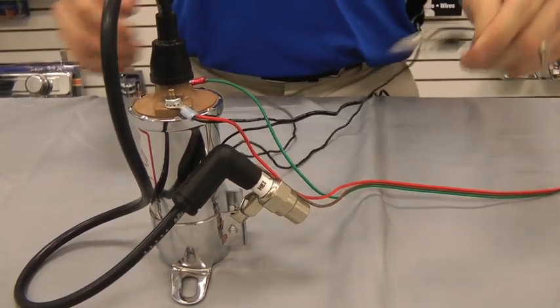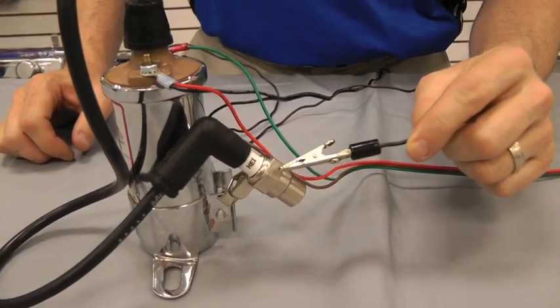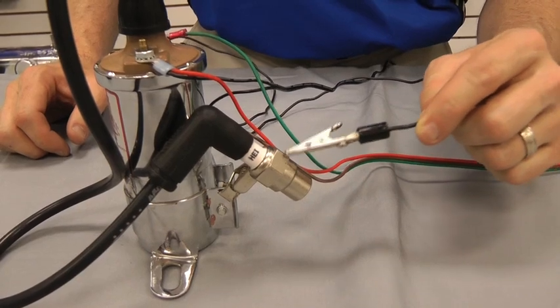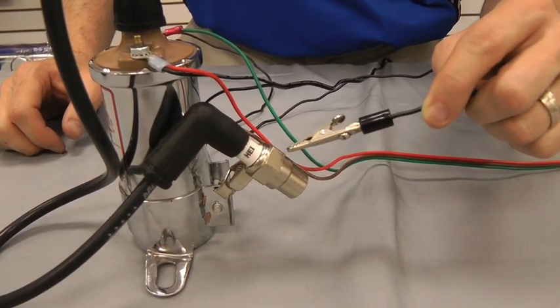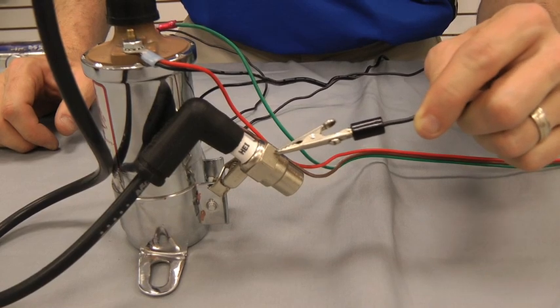And again, you're just going to take your jumper wire that's attached to your negative side of your coil and tap it on a clean engine ground. It could be your engine block. It could be your manifold. As long as it's clean, it should work.